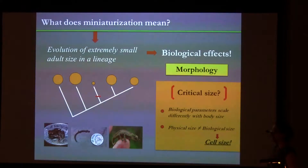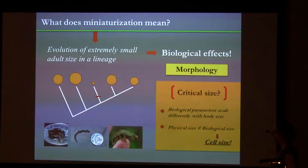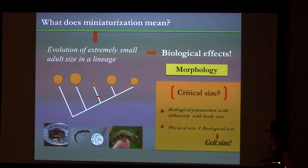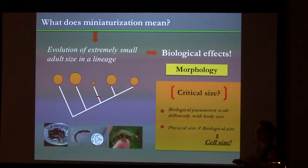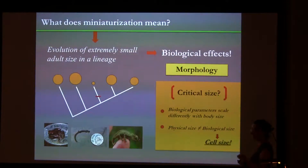And what about miniaturization? Miniaturization is the evolution of extremely small adult size in a lineage. It involves changes in ecology, behavior, physiology, and morphology, such that miniaturized species are not simply dwarf versions of larger relatives. The critical size threshold is difficult to establish because biological parameters scale differently with body size, and physical size is not the same as biological size, which takes cell size into account.